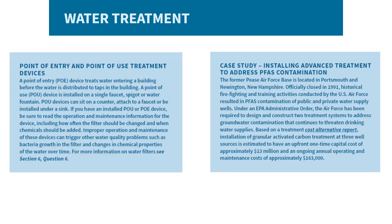One example of advanced technology being applied for a specific contaminant of concern is in the treatment of PFAS and PFOS, the non-stick chemical that has been shown to cause health issues and has been found in groundwater sources in recent years. These additional technologies are often associated with federal orders and often come with a hefty price tag, as in the case of the Pease Air Force Base in Portsmouth and Newington, New Hampshire. PFAS and PFOS are found in firefighting foams that were used at the base and were found to have contaminated local groundwater sources, subsequently impacting the community's drinking water source.